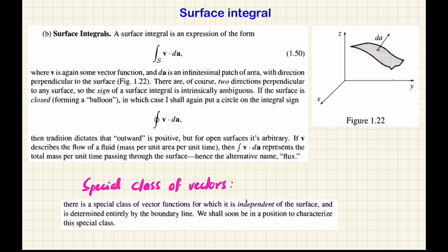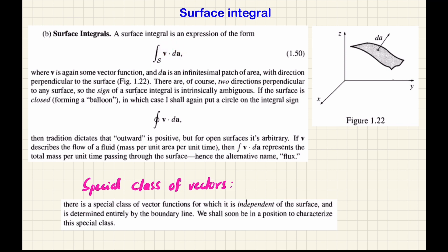One direction is perpendicular — the upward direction. The downward direction is negative. That is a convention, it is a freedom we have — we can fix the direction. Now, we have a vector function v and there is an infinitesimal patch of area dA. We will get a scalar value when we integrate it over the surface.